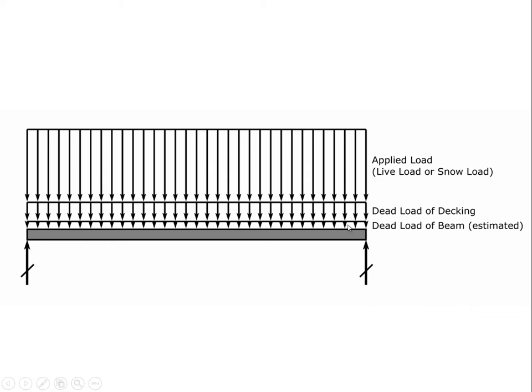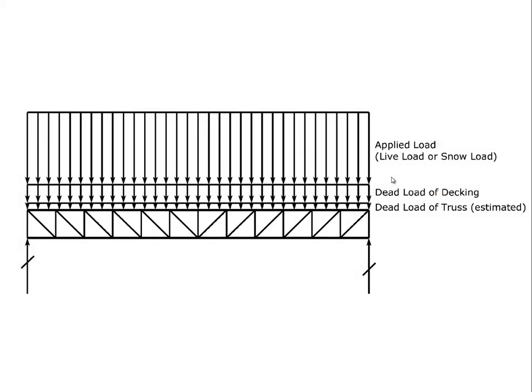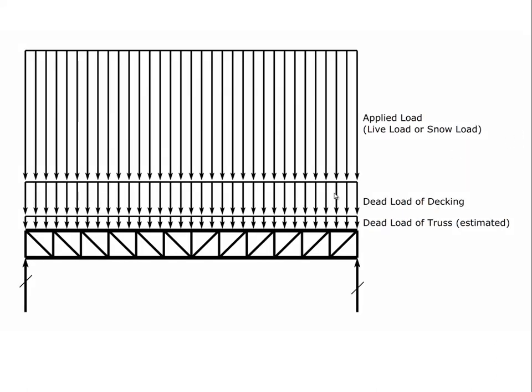The dead load of the beam doesn't actually exist on top of the beam — this is the self load of the beam, distributed through it — but for simplicity we just put it on top the same as we deal with dead load of decking or occupancy load. We do the same thing for trusses. With higher applied loads we'll typically have larger decking loads and the dead load of the structure itself will be higher, but estimation techniques remain pretty much the same. We know roughly what percentage of the total load the spanning member is and try to account for that to minimize iterations in sizing.